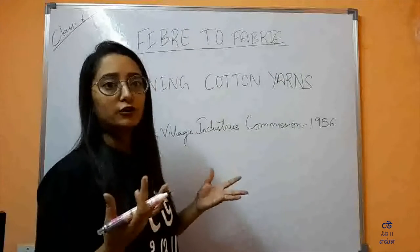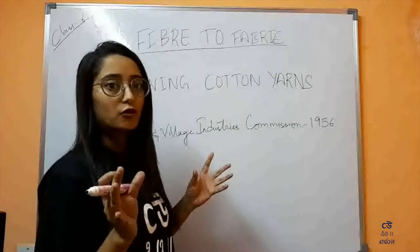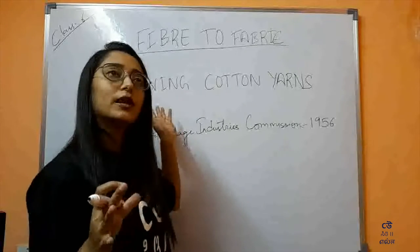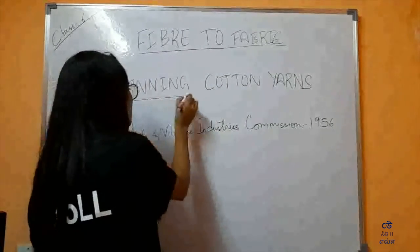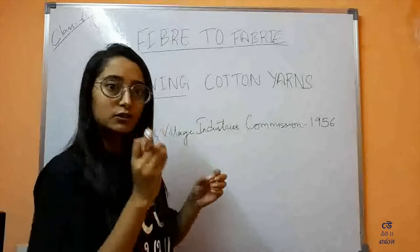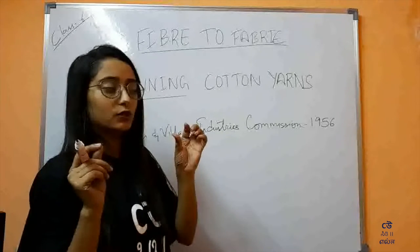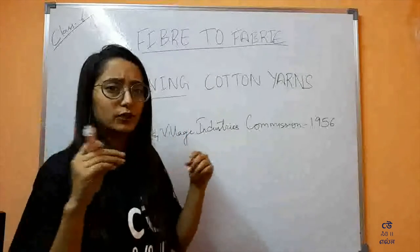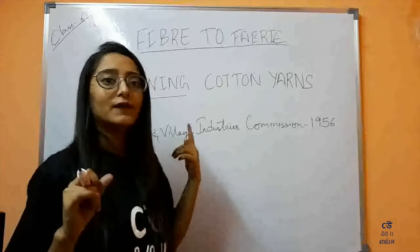We have seen how jute and cotton are harvested. To make yarns out of fibers, there is a process called spinning. I want you all to do one activity: take some cotton, hold it in one hand, and with another hand pinch it with the forefinger and thumb. Just start pulling and rubbing it. As long as you pull it, you'll form a thread. That is what is called spinning.